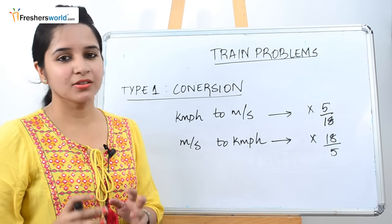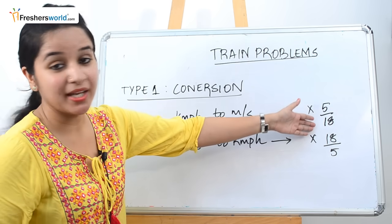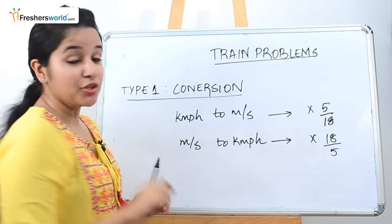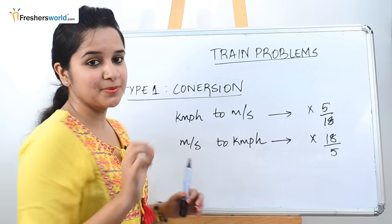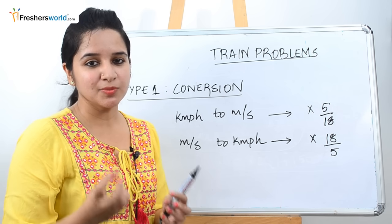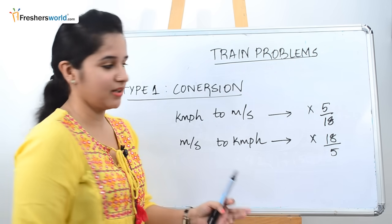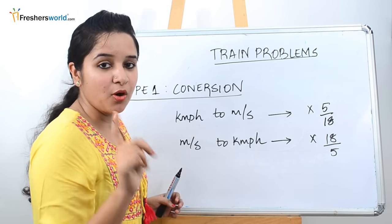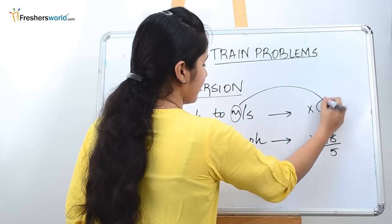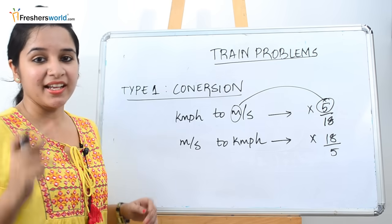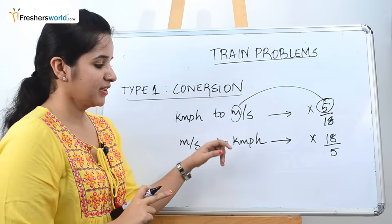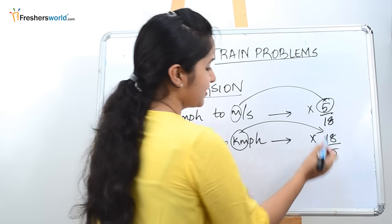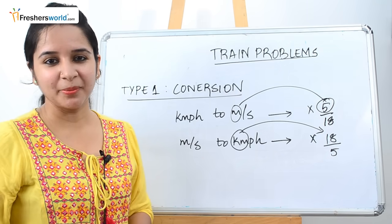People get confused between 5/18 and 18/5, but there is a simple way to remember. If your answer has to be in meters per second — meter being the smallest unit — the smaller number 5 will be in your numerator, so remember 5 for meters. Kilometer is the higher unit, so when your answer is in kilometers per hour, the higher numerator 18 goes on top, giving you 18/5. Simple to remember!